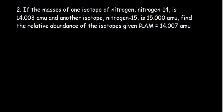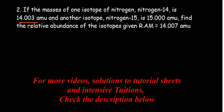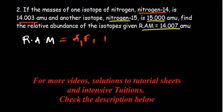If the masses of one isotope of nitrogen—nitrogen-14 is 14.003 amu and another isotope, nitrogen-15, is 15.000 amu—find the relative abundance of the isotopes given that the relative atomic mass is 14.007 amu. Remember our formula: the relative atomic mass equals the atomic mass multiplied by the abundance.